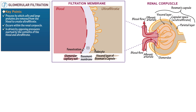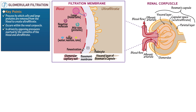First indicate some key components of blood within the capillary: large molecules such as blood cells, negatively charged molecules, mid-sized molecules such as proteins, and small molecules, for example water, wastes, and ions. Show that the capillary wall blocks the largest cells. The basement membrane repels negatively charged molecules. The smaller filtration slits block the mid-sized molecules.